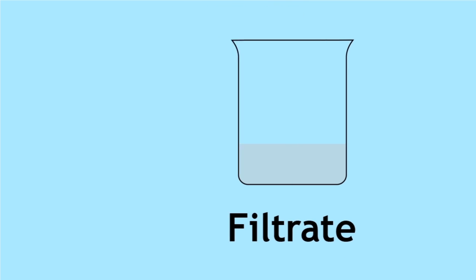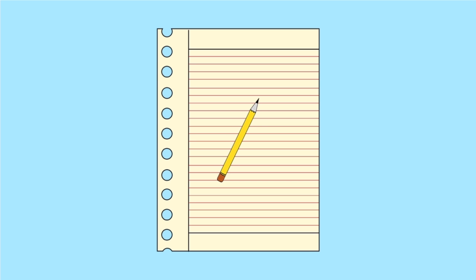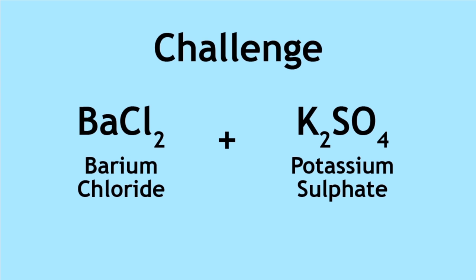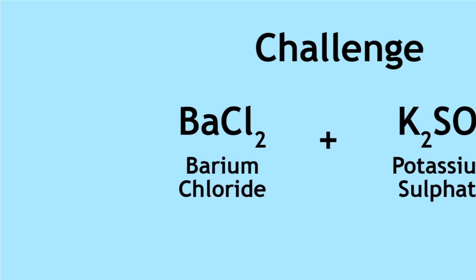Are you ready for a challenge? Let's grab a pencil and a piece of paper. Predict the products for the double displacement reaction of barium chloride and potassium sulfate, and write the reaction equation. Remember to include the state symbols and to fully balance the equation.